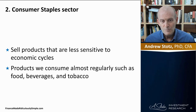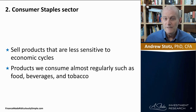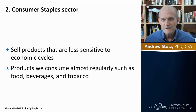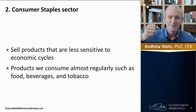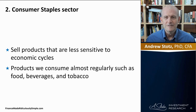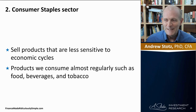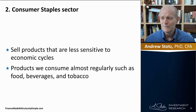The next is consumer staples, where companies sell products less sensitive to the economic cycle. Staples here means staple foods — things we need on a consistent basis, like home supplies. Products we consume regularly: food, beverages, and tobacco are all in this classification.